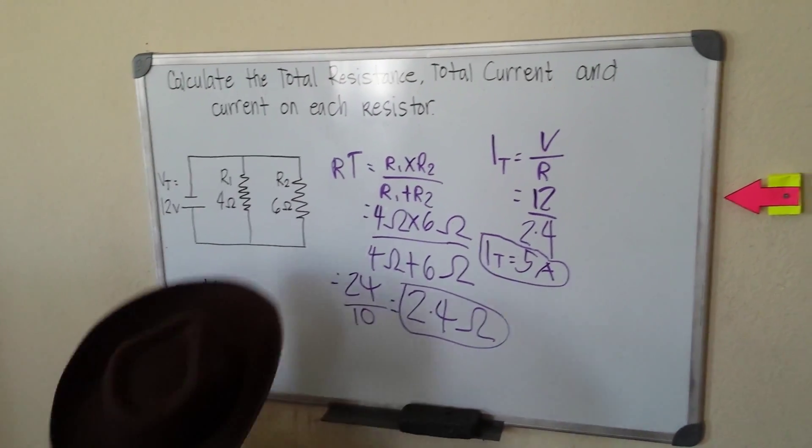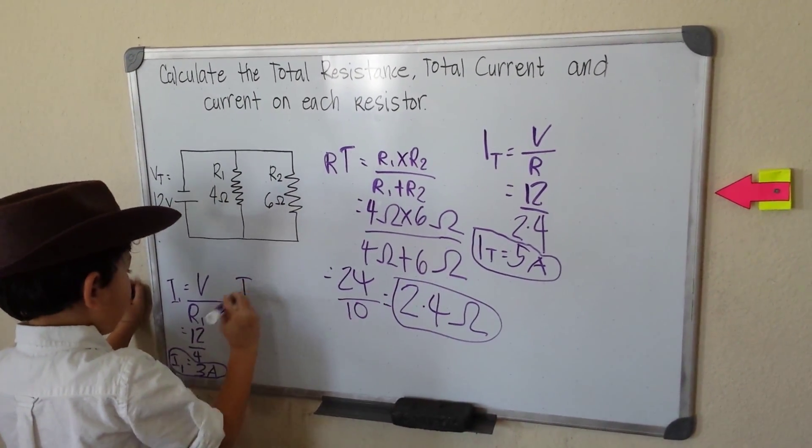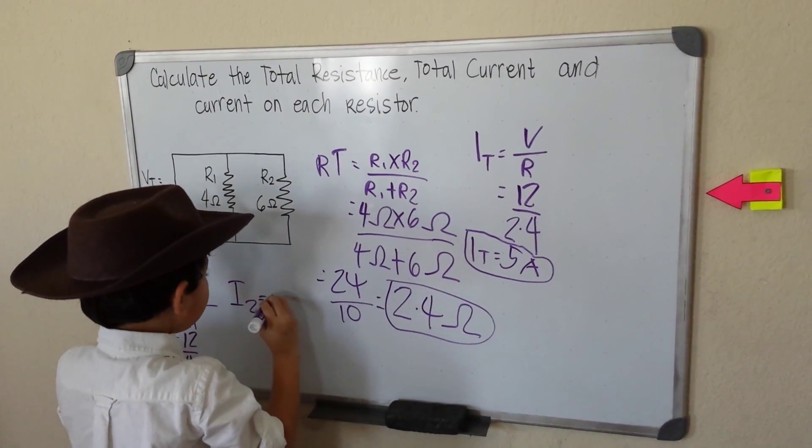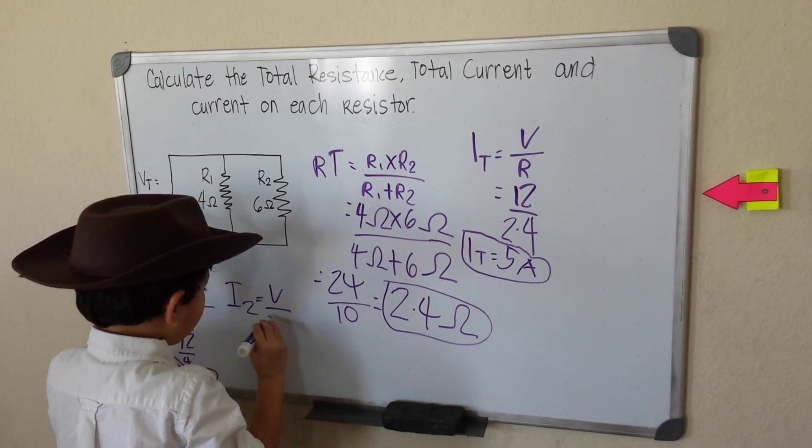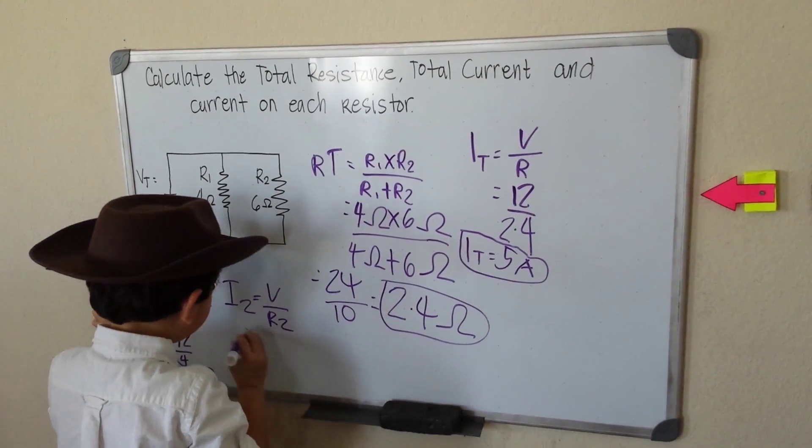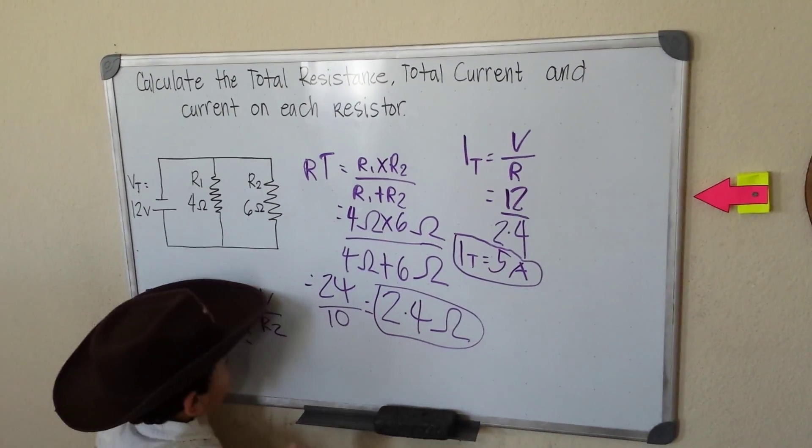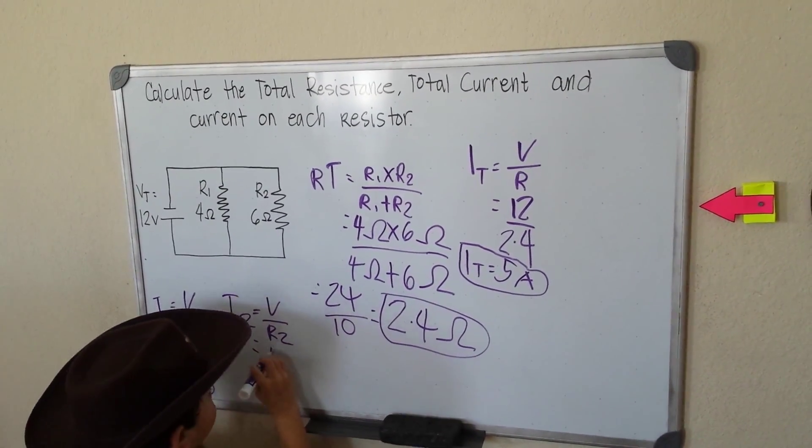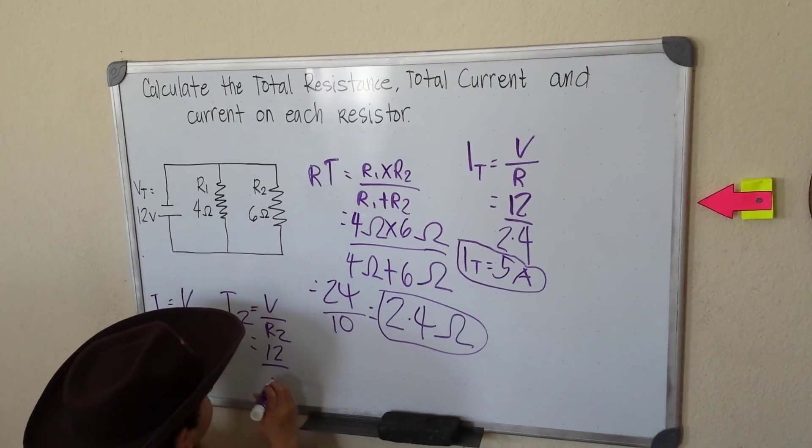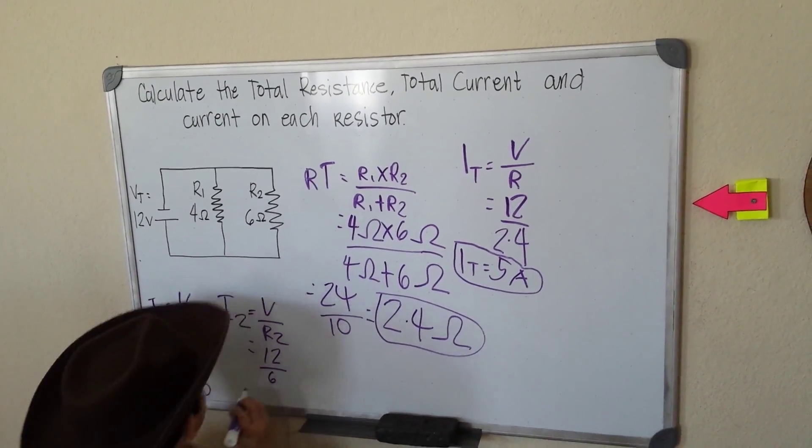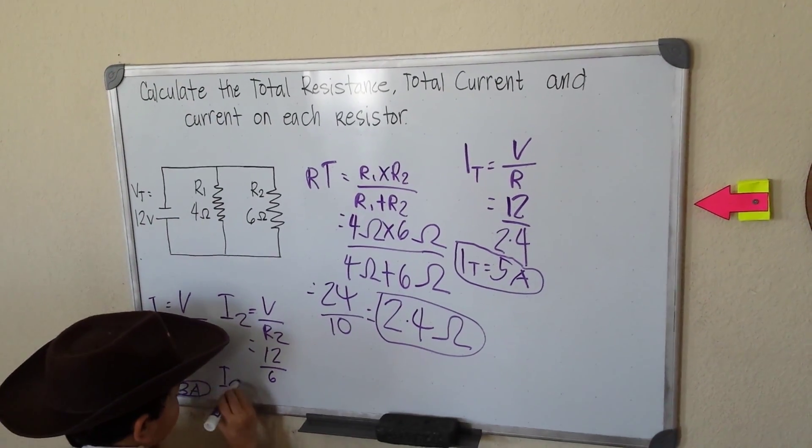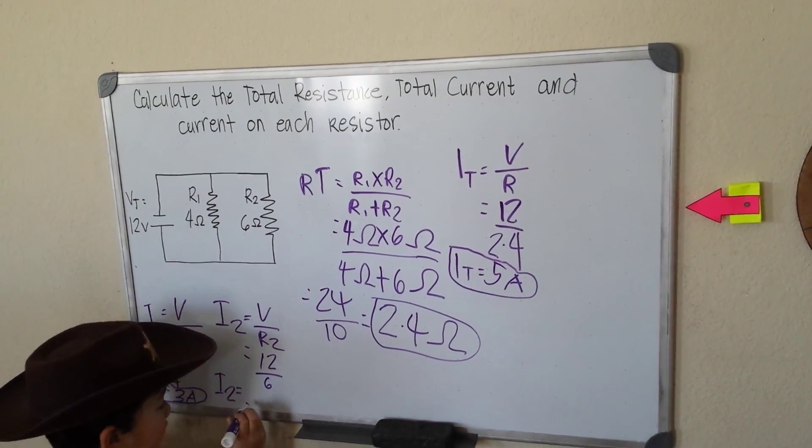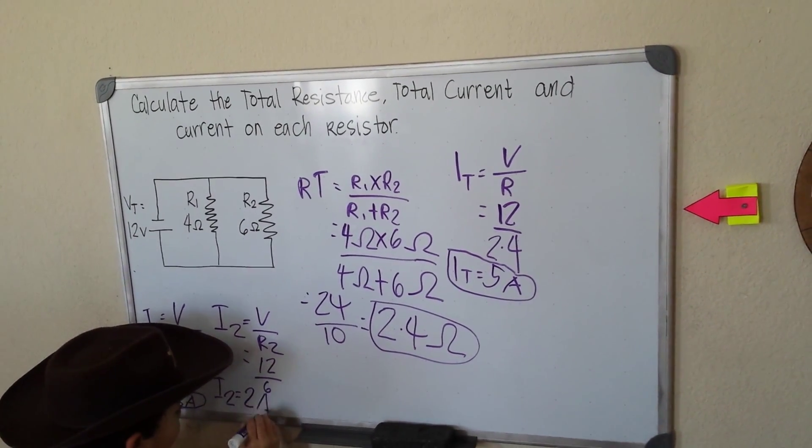Now I2 equals voltage over resistor 2. The voltage is 12, and then R2 is 6. So current 2 equals 6, 12. That will be 2 amperes.